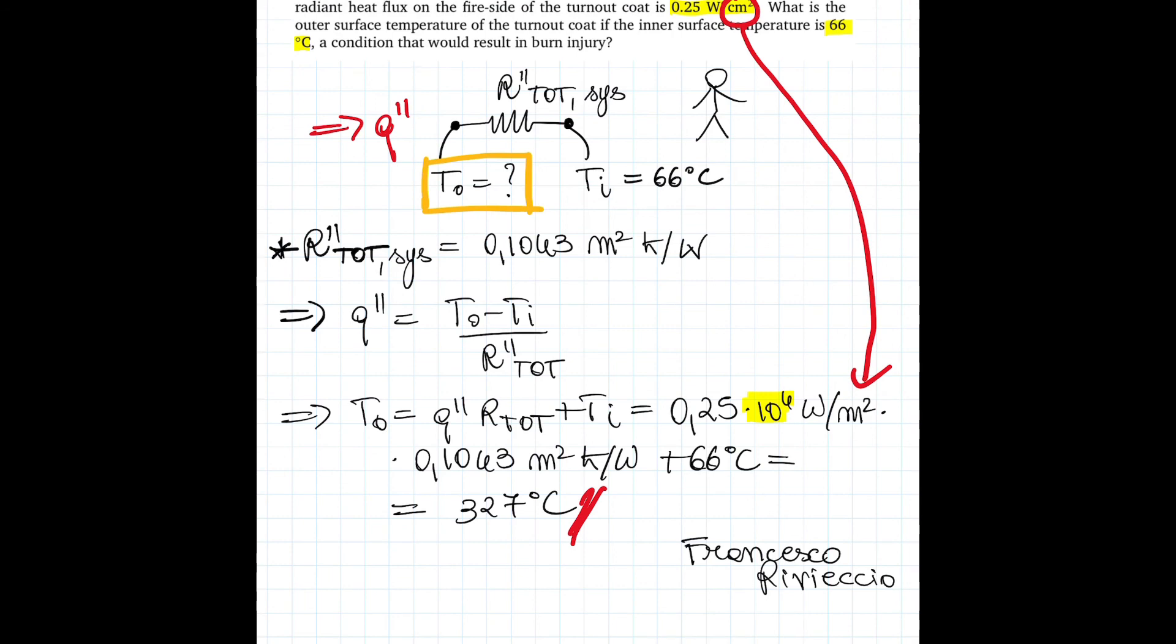It is worth commenting on the results we just obtained. Indeed, what does this 327 degrees actually mean? Well, it entails that the firefighter's jacket serves its purpose. Why am I saying that? As a starting point, 327 degrees is actually a high temperature. So, we have just proven that the firefighter's jacket protects the firefighter from a high temperature.